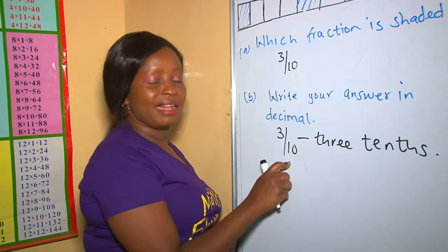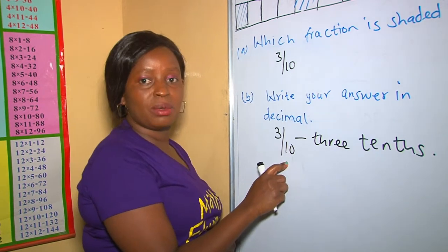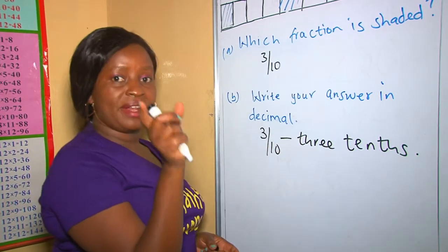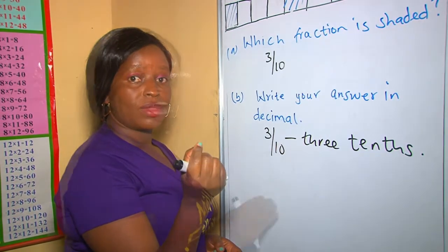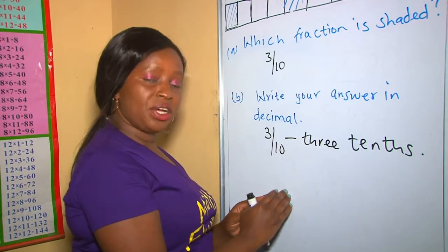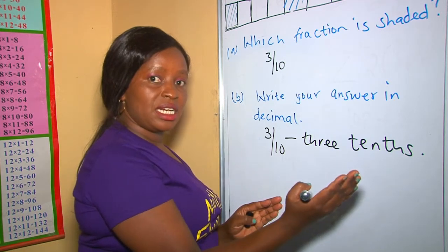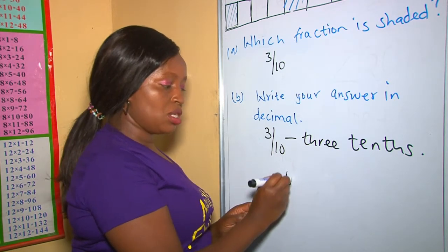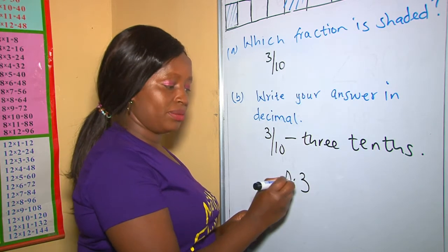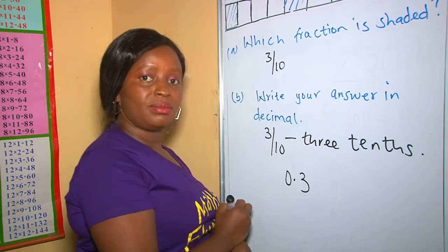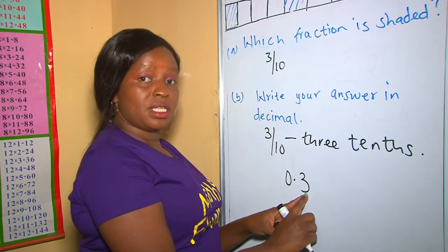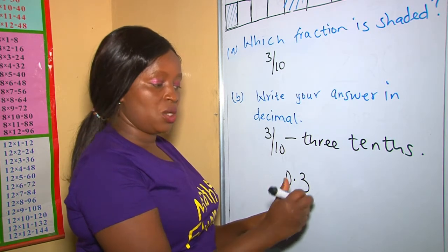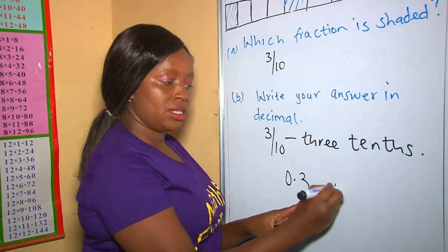Therefore, this 3 tenths as a decimal is going to be 0.3, because after the decimal point on the right, the place value is tenths. So it's going to be 0.3. The place value of this digit is tenths, so these are 3 tenths. As you can see, this digit is 3, so these are 3 tenths.